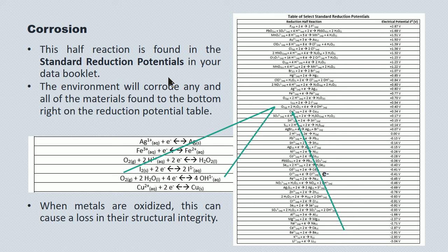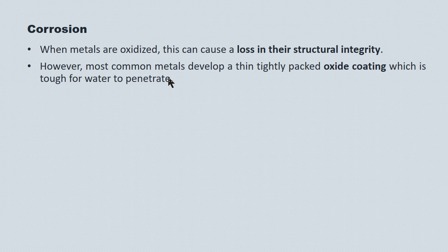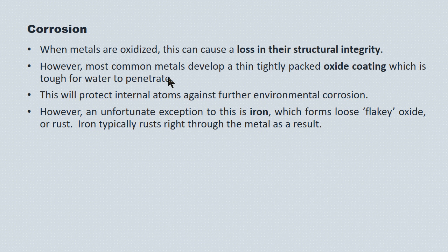There are problems associated with this. Metals, when they're oxidized, can lose their structural integrity. However, most common metals thankfully develop a thin, tightly packed oxide coating which is tough for water to penetrate, protecting the internal atoms against further environmental corrosion. An unfortunate exception to this rule is iron. Iron forms a loose, flaky oxide material that chips off the metal, exposing further metal to be oxidized and rusted. We often see iron rusted straight through.